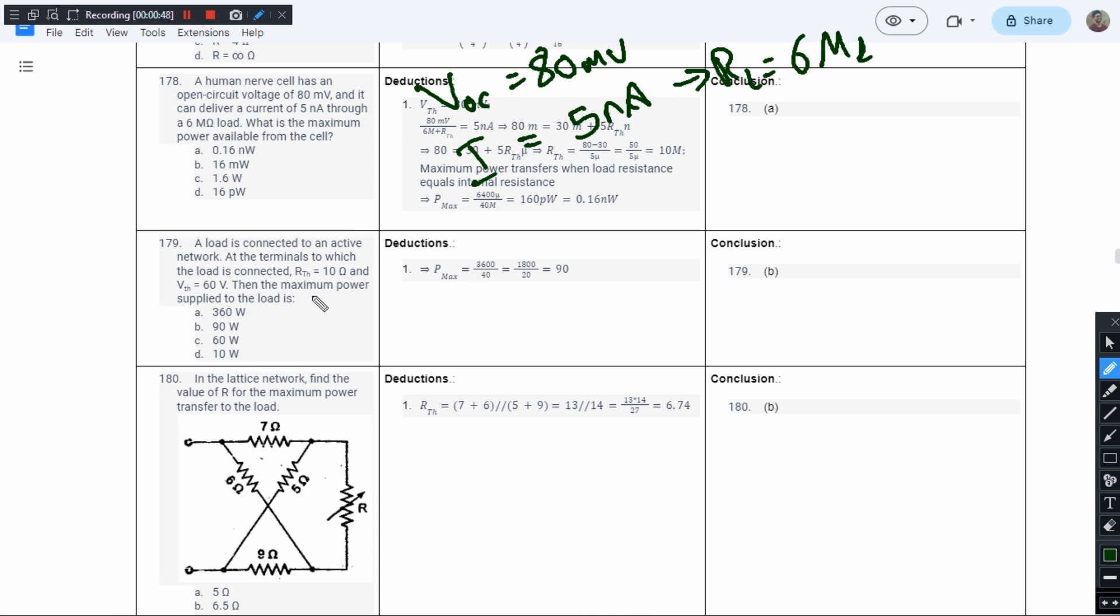Let us try to approach this. We have an open circuit voltage which equals the Thevenin voltage, and we have a load current. From this information, we can find the internal resistance of the nerve cell. Let's construct a Thevenin equivalent circuit.